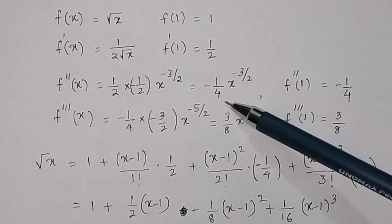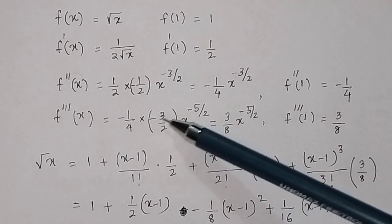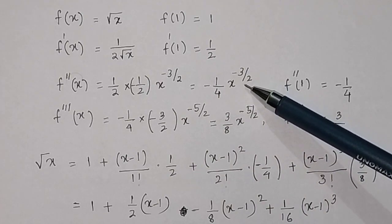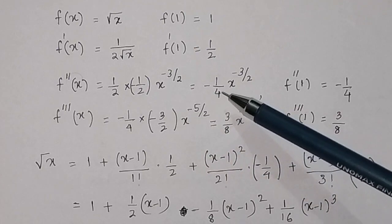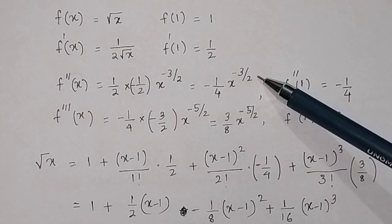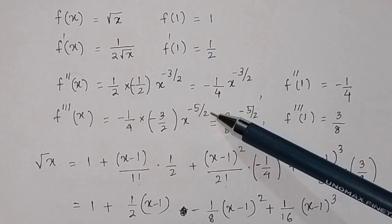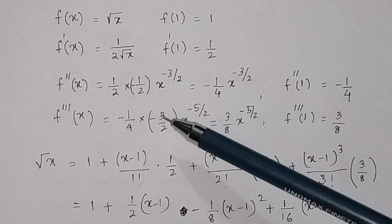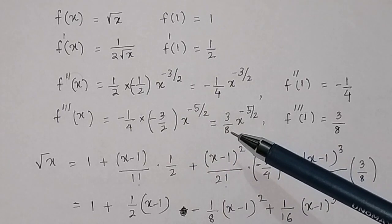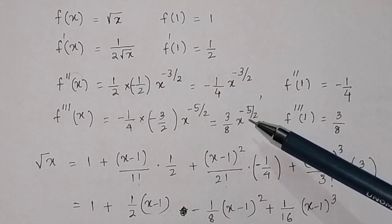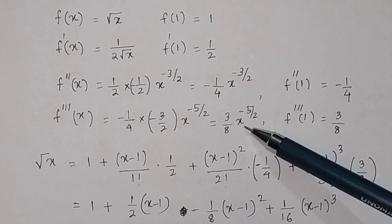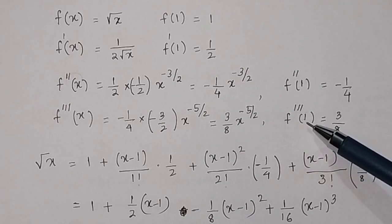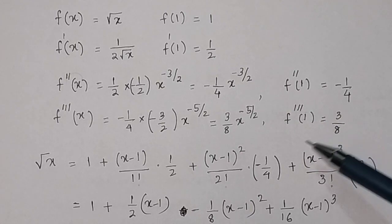For the third derivative, we differentiate −(1/4)x^(−3/2). The derivative of x^(−3/2) is (−3/2)x^(−5/2), so multiplying: −(1/4) × (−3/2) = 3/8. Thus the third derivative is (3/8)x^(−5/2), and at x = 1, f'''(1) = 3/8.